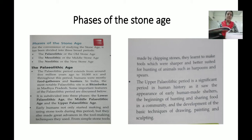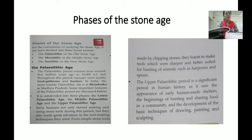Before I start with the chapter, I want everybody to take out the textbook, page number 19. Are you all ready? Shall we start? Phases of the Stone Age: for the convenience of studying the Stone Age, it has been divided into three broad periods — the Paleolithic (Old Stone Age), the Mesolithic (Middle Stone Age), and the Neolithic (New Stone Age). Today we will learn how each of these stages used stone.